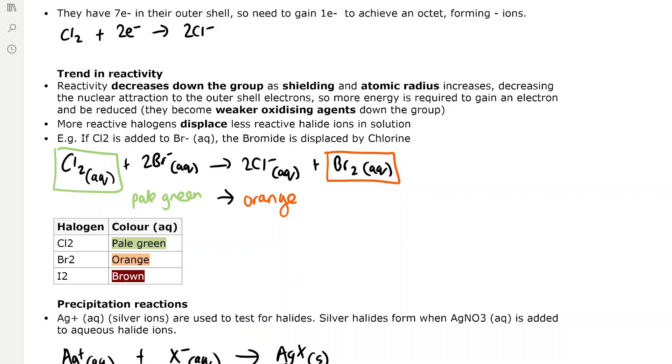For example, chlorine reacts with bromide ions to form chloride ions and bromine. Chlorine displaces the bromide ions. It starts off as pale green when chlorine is dissolved in aqueous solution and then goes to orange as bromine is dissolved in aqueous solution.